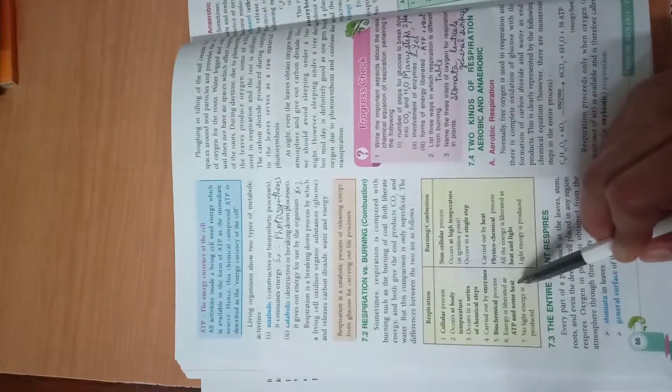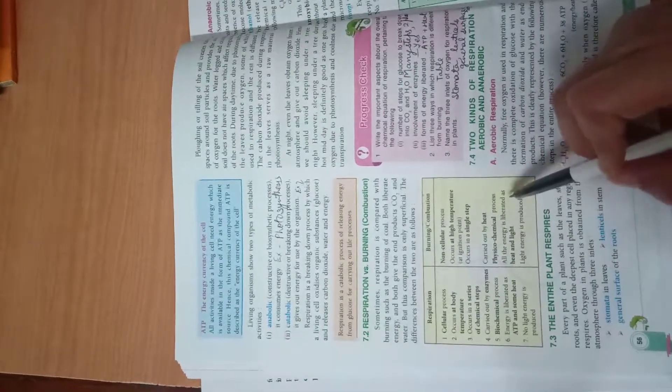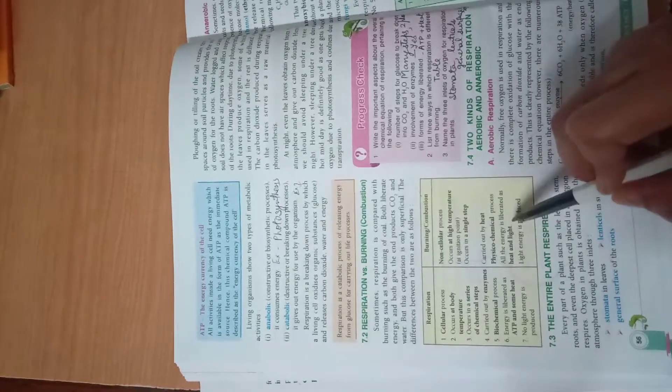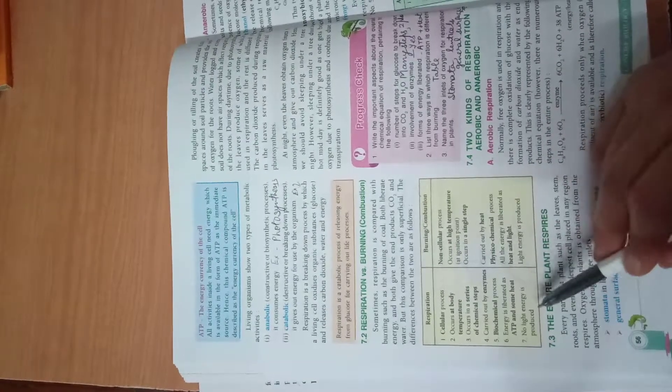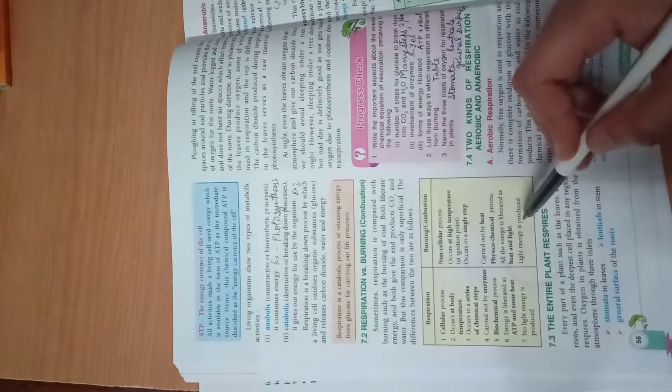Respiration is a biochemical process while burning is physical-chemical. In respiration, energy is liberated as ATP and some heat, while in burning all energy is liberated as heat and light. No light energy is produced in respiration. So these differences, which are seven in number, you have to learn.